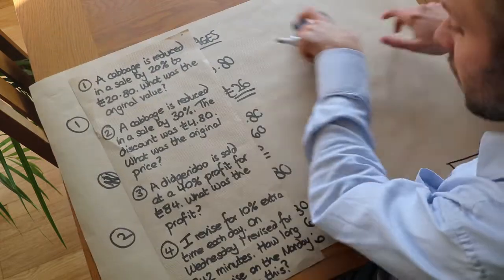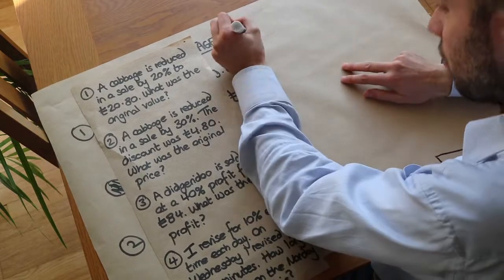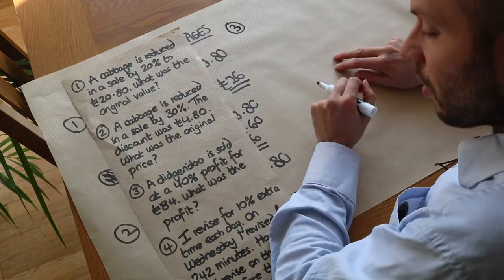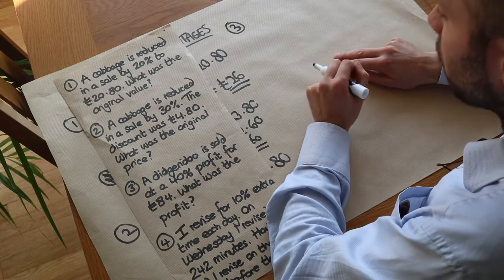Now what about the next one? A didgeridoo is sold at a 40% profit for £84. What was the profit?